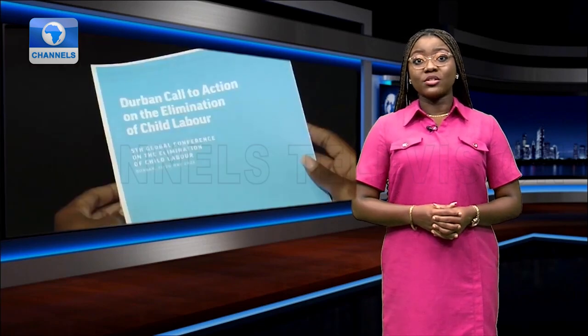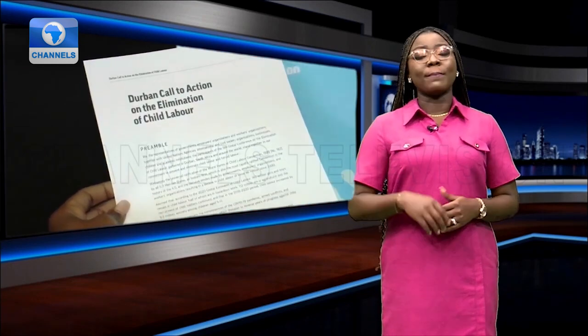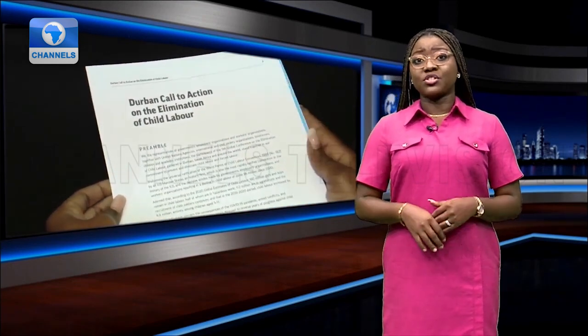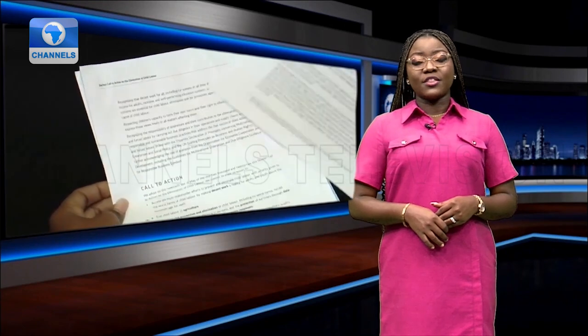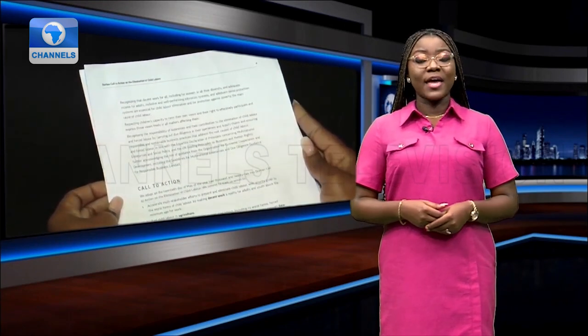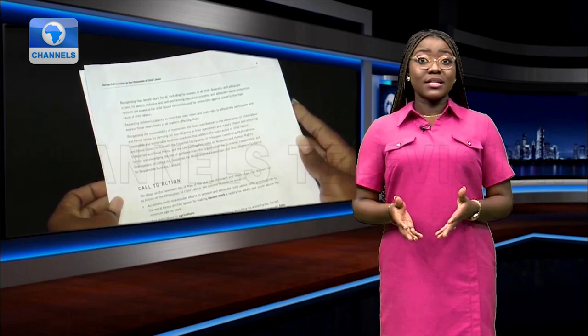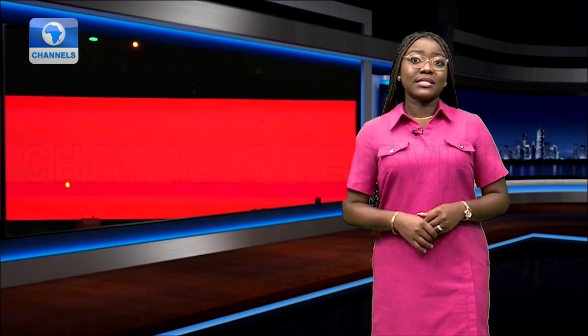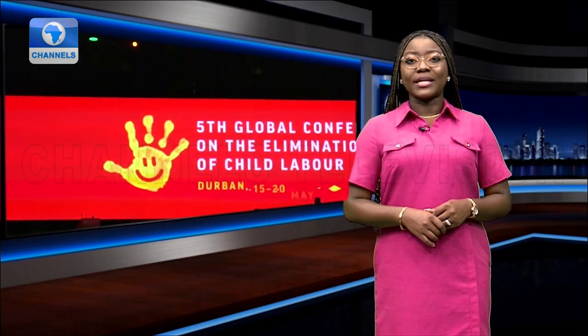Welcome back to the program. The fifth global conference on the elimination of child labor has ended with the Durban Call to Action document, which prescribes priorities to end the problem and all the social complications associated with it. The event, put together by the International Labor Organization and UNICEF, had government, labor, and civil societies as well as some Nobel Peace laureates in attendance in South Africa.